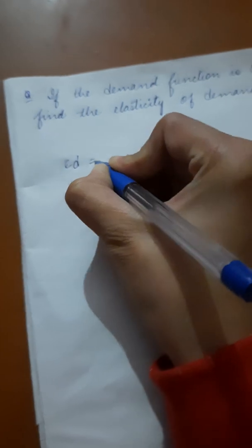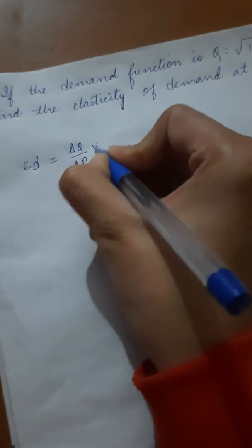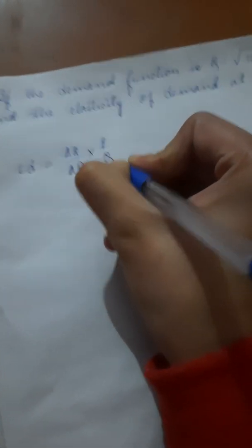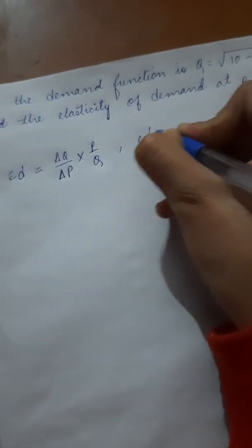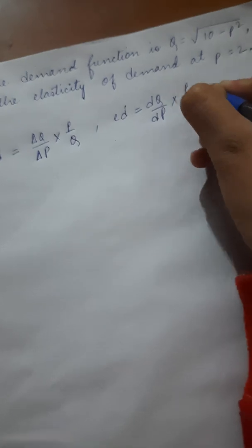So, elasticity of demand is dq/dp times p/q.